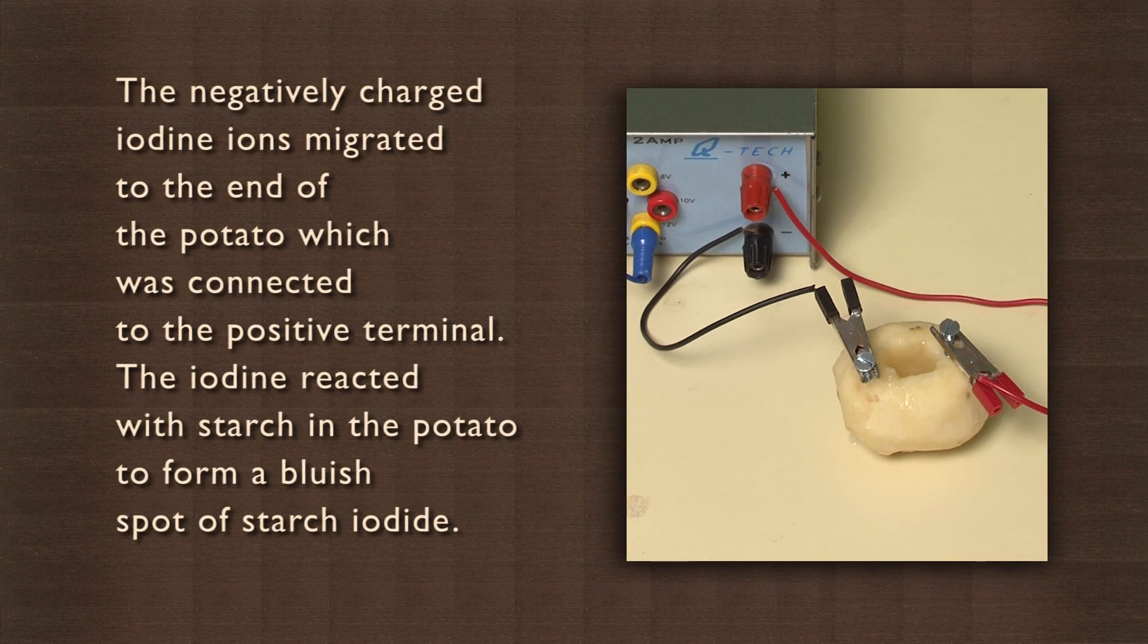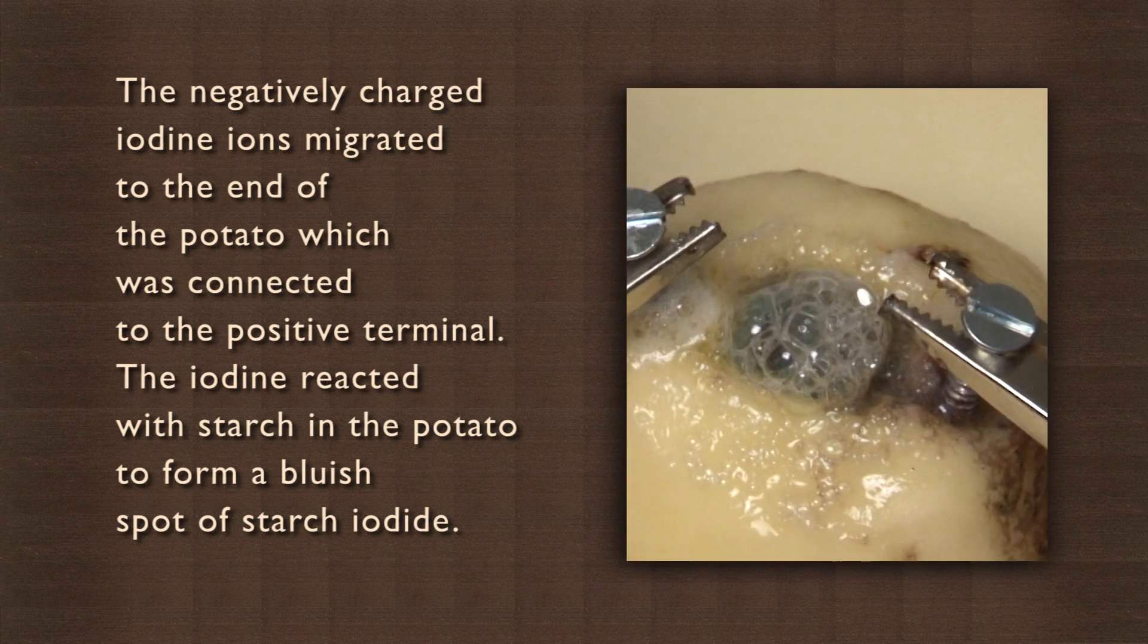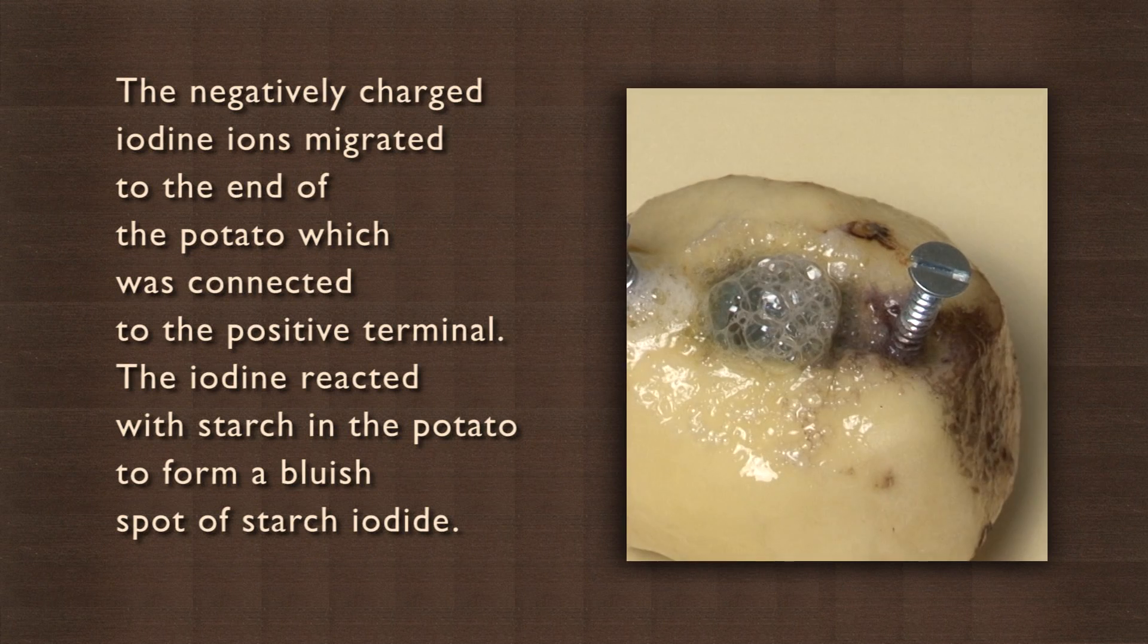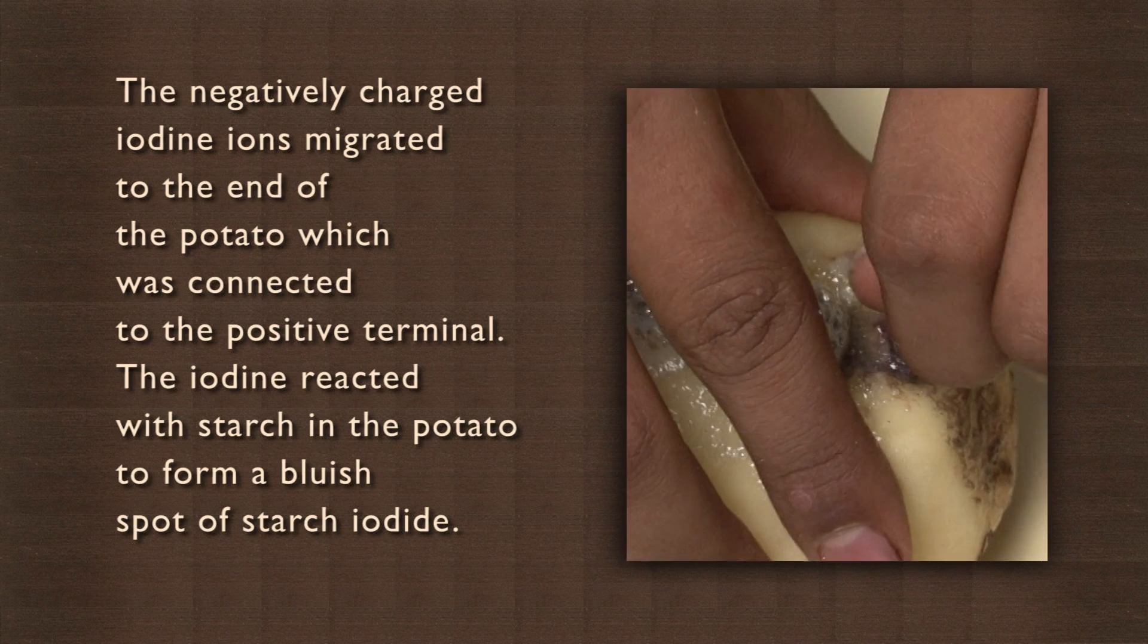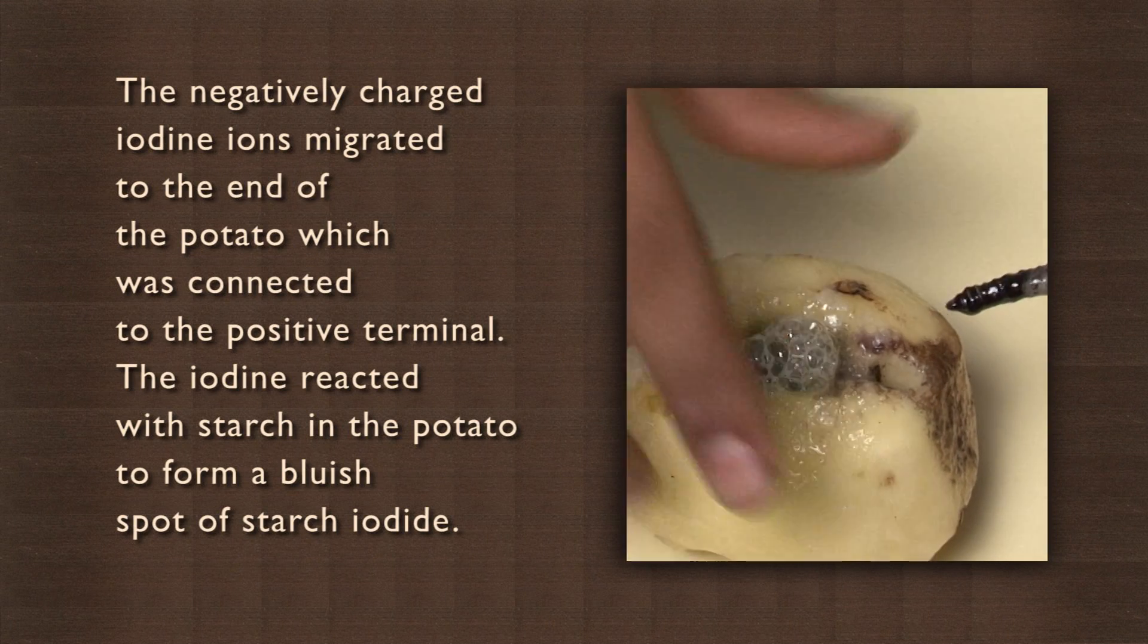The negatively charged iodine ions migrated to the end of the potato which was connected to the positive terminal. The iodine reacted with starch in the potato to form a bluish spot of starch iodide.